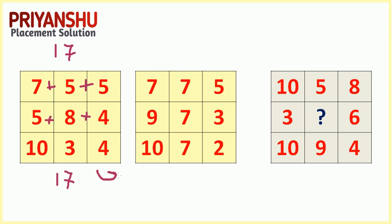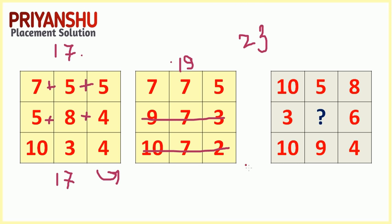In the next block: 7 plus 7 is 14, and 14 plus 5 is 19. So every row in that block has a summation of 19. There are two logics implemented here: first is summation of the row, and second is the prime number pattern. The sums follow the prime number sequence: first 17, next is 19, and the next prime number is 23 — because 20, 21, and 22 are not prime, but 23 is.